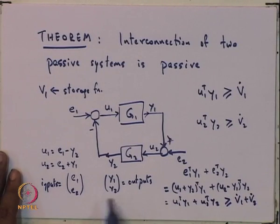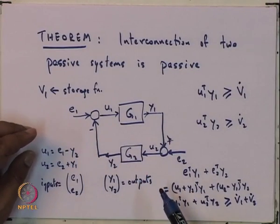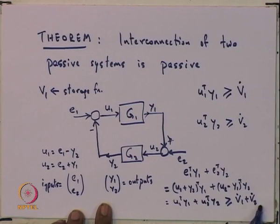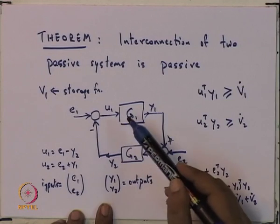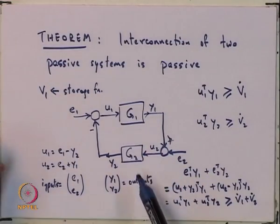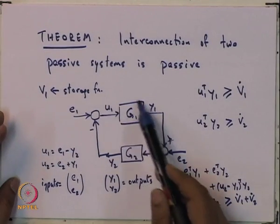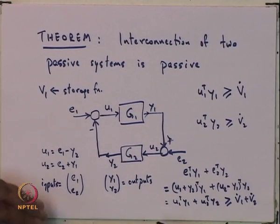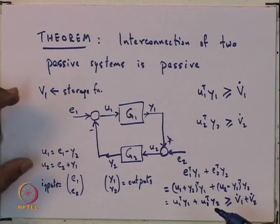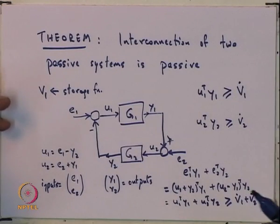This means that for the interconnected system with inputs E1, E2 and outputs Y1, Y2, the product of inputs times outputs is greater than or equal to the rate of change of a storage function V = V1 + V2, which is the sum of the individual storage functions. In physical systems, the complete storage function is the sum of both individual storage functions. Therefore, if you have two systems which are passive and you interconnect them, the interconnected system continues to be passive.